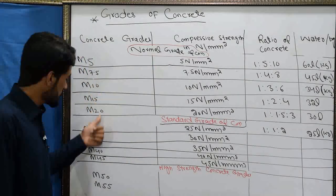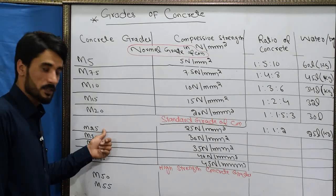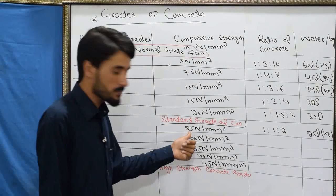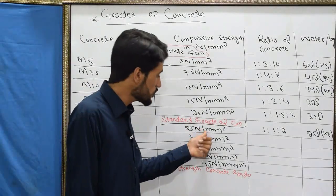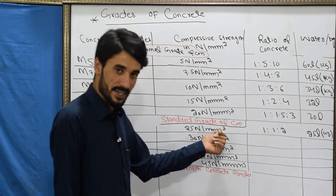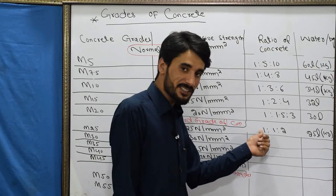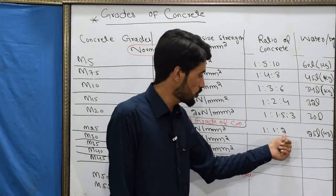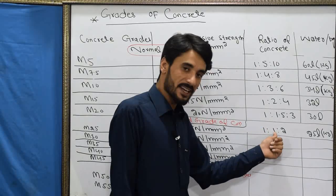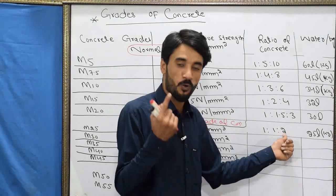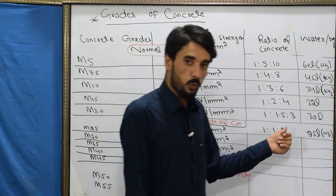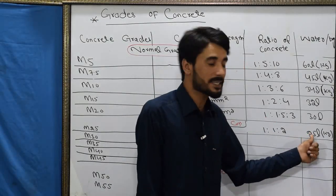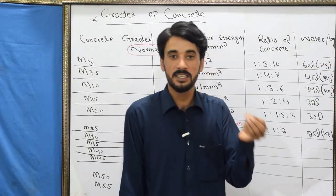For M25: M is mix, and 25 is the minimum compressive strength in Newton per millimeter square after 28 days. The ratio between the ingredients is 1:1:2 — where 1 indicates cement, 1 indicates sand, and 2 indicates coarse aggregate. The water required for M25 grade concrete is 25 liters per bag.